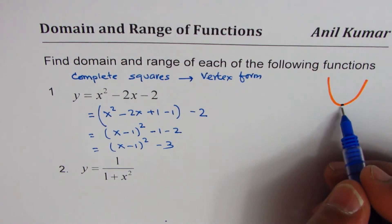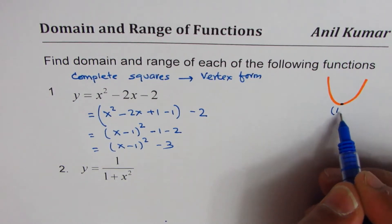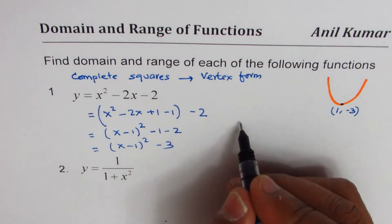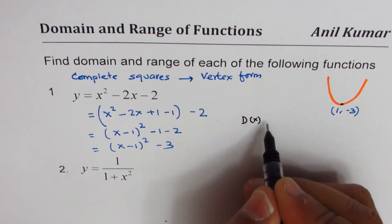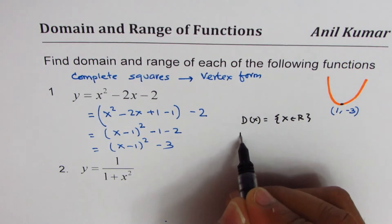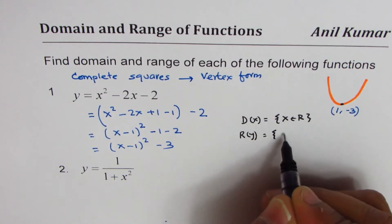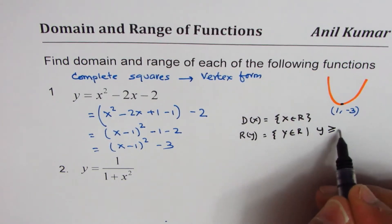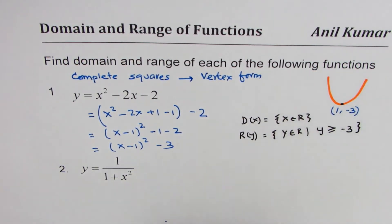So we know the y value is minus 3 here. So the point here is 1, minus 3. So from here we can write both domain and range of the function. Domain is x belongs to real numbers, and range will be y belongs to real numbers where y is greater than or equal to minus 3. That's the minimum, the absolute minimum for the given parabola in quadratic form.